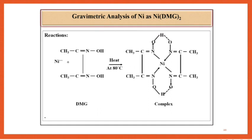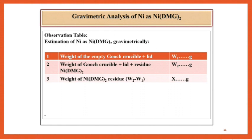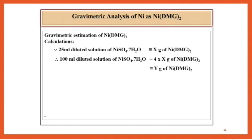Reaction is shown over here. Observation table: Weight of the empty gooch crucible plus lid. Weight of the gooch crucible plus lid along with the residue. And finally weight of nickel DMG residue as W2 minus W1. Calculations.